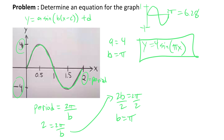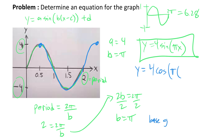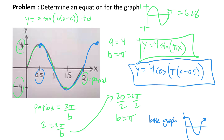I'd encourage you to try this as a cosine graph as well. The a value and the b value will be the same because the amplitude and period are unchanged. But the original cosine graph starts at the top and goes down. This graph starts at 0.5 on the x-axis, which means we have to shift the graph 0.5 to the right. So the equation as a cosine function would be 4 cosine pi times (x minus 0.5).